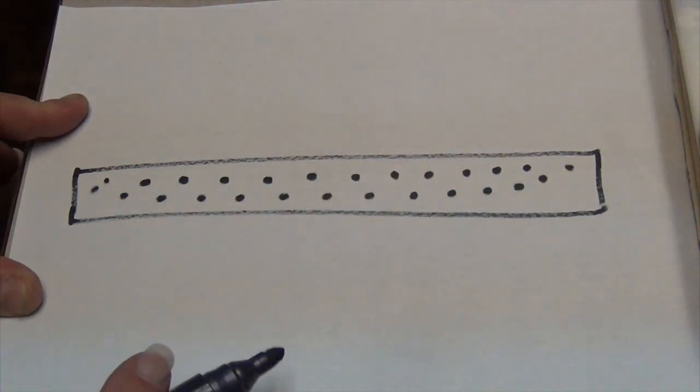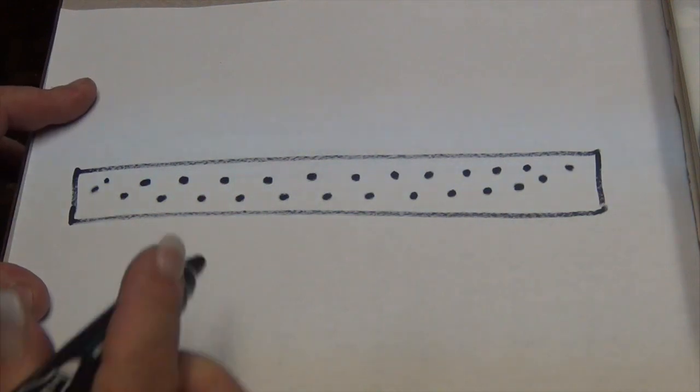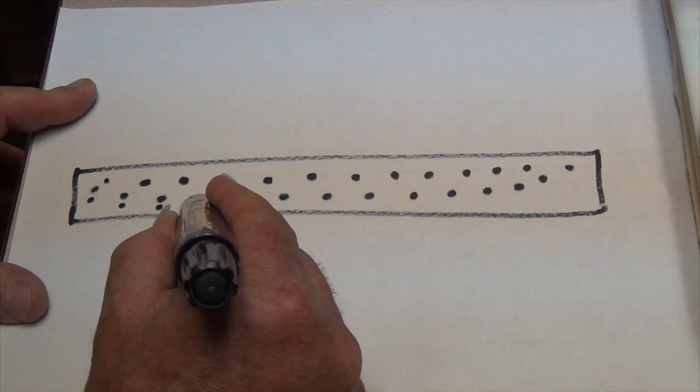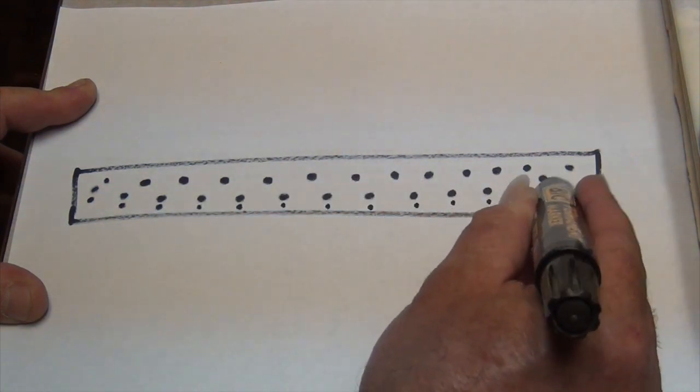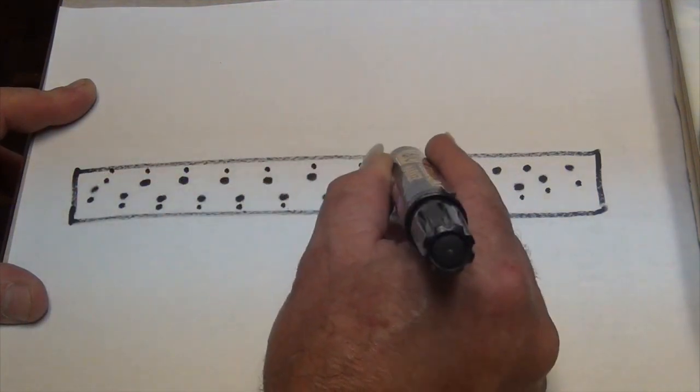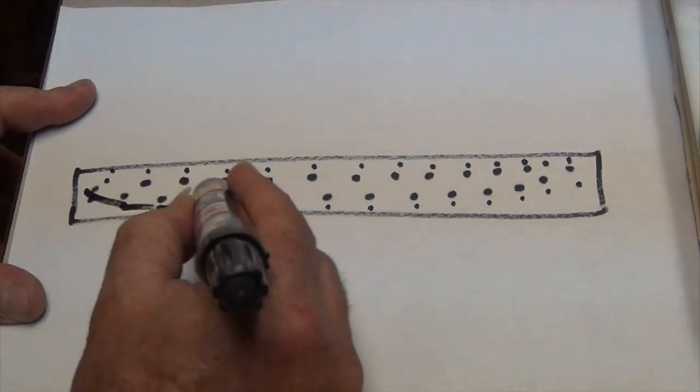You want to make the stringer wider than this, leaving some extra wood that's going to be milled off when you shape the board. I usually go a quarter of an inch below each of these points and a quarter of an inch above the foil points, and then take a straight edge and connect all these points.